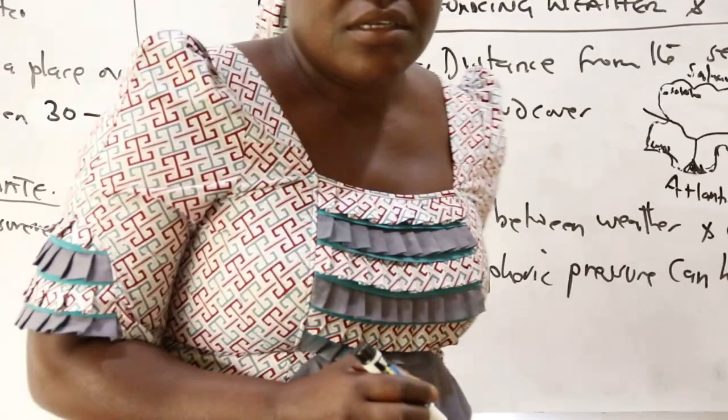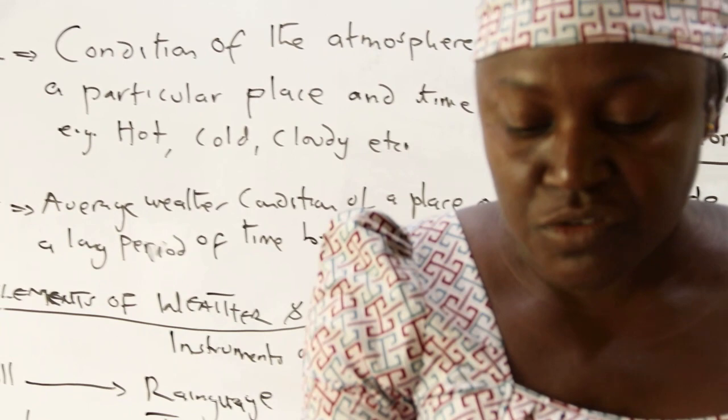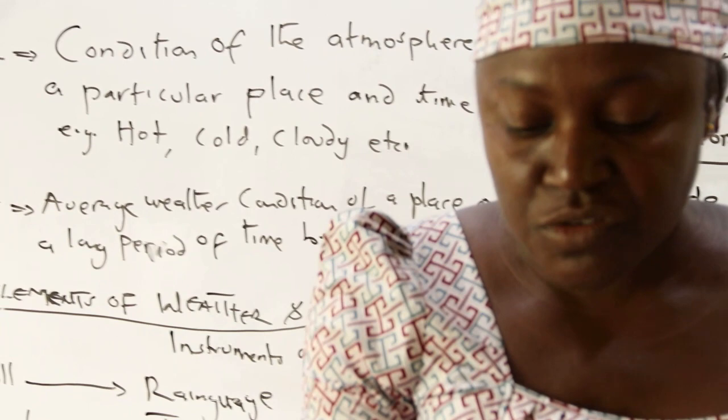You are going to distinguish clearly between weather and climate, and then explain how atmospheric pressure can be measured with the aid of a diagram. We hope to see you in the next lesson. Wish you the best. Stay safe and observe all the rules. Thank you so much.